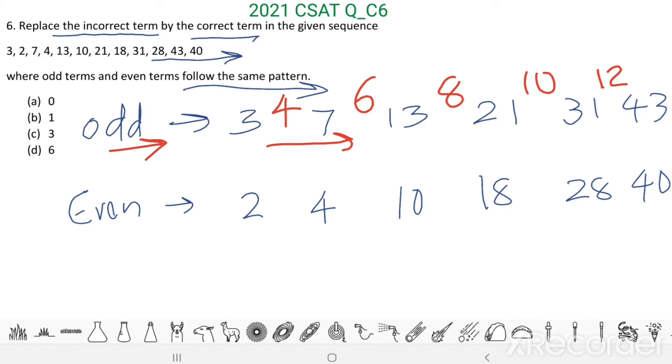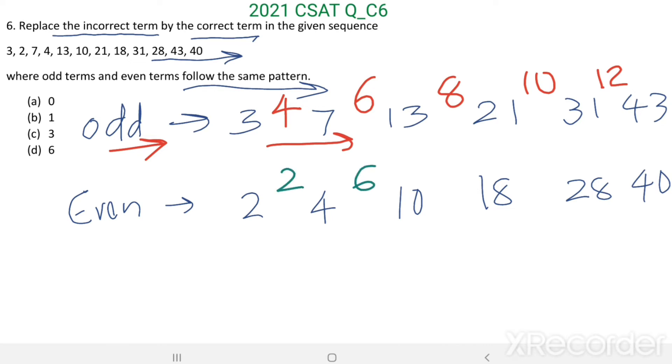Now even terms: 4 minus 2 equals 2, 10 minus 4 equals 6, 18 minus 10 equals 8, 28 minus 18 equals 10, 40 minus 28 equals 12. So here this is an increasing series. We got a new series which is increasing by 2: 4, 6, 8, 10, 12. 4 plus 2 equals 6, 6 plus 2 equals 8, 8 plus 2 equals 10, 10 plus 2 equals 12.